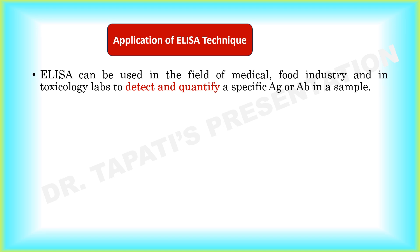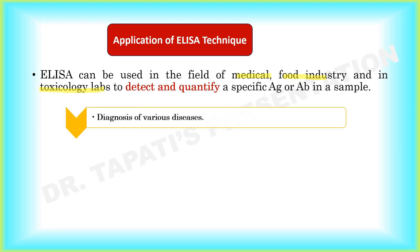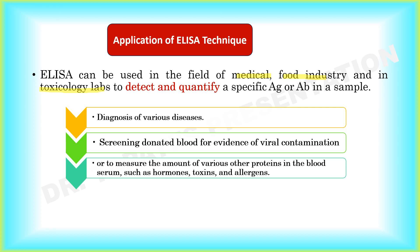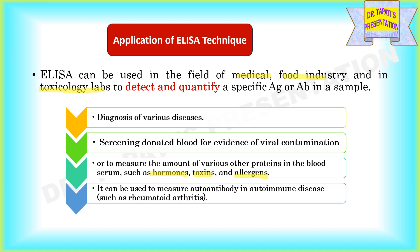ELISA can be used in various fields like in medical, food industry, and in toxicology labs to detect and quantify a specific antigen and antibody in a sample. It can be used for the diagnosis of various diseases. It is also used for the screening of donated blood in order to check for viral contamination. It is used to measure the amount of various proteins in blood serum including hormones, toxins, and allergens. It can also be used to measure autoantibodies in autoimmune disease.